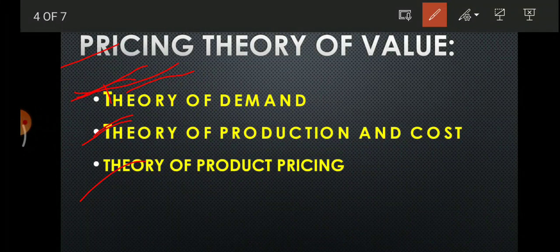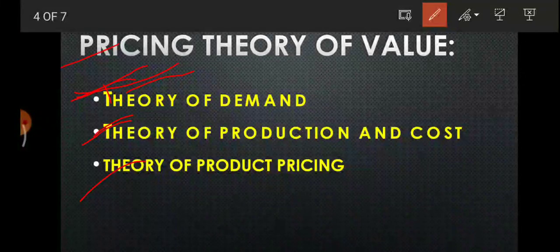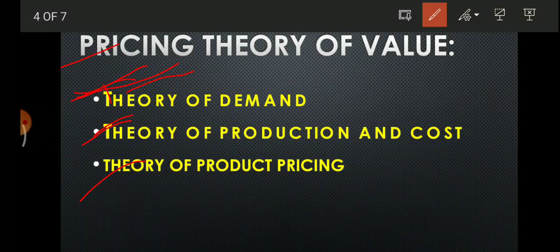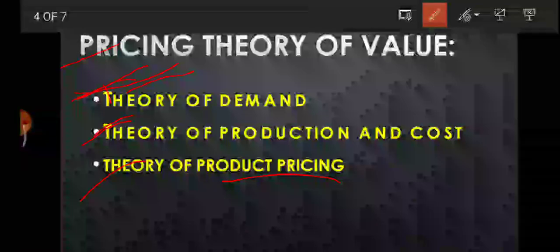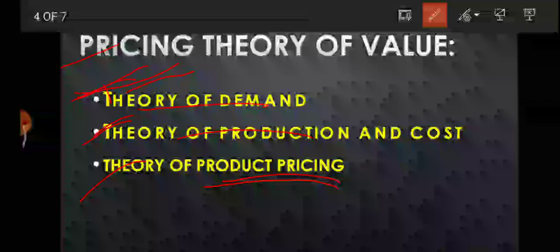Next is the theory of product pricing. When pricing a product, we need to identify which market type it belongs to. There are four types of market: perfect competition, monopoly, monopolistic competition, and oligopoly. We need to see which market type our product belongs to, and on that basis decide the price. The content explained here is already available in your book. If you need notes, please message or comment on my YouTube channel and I will share them.